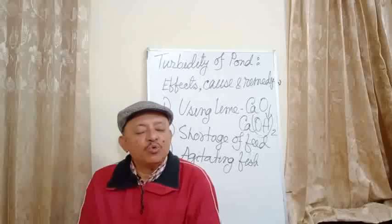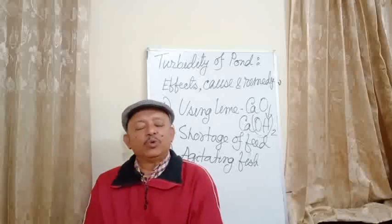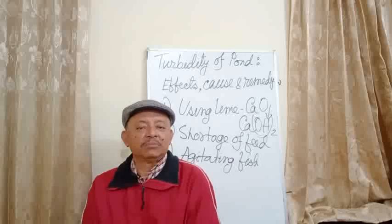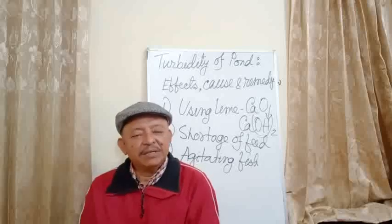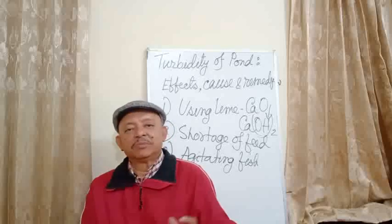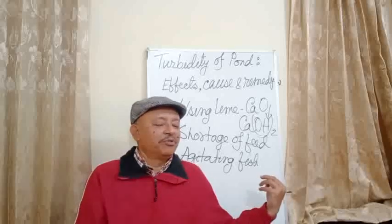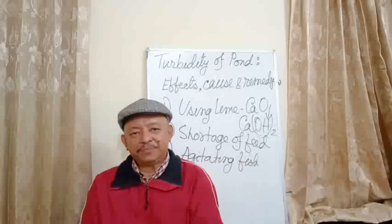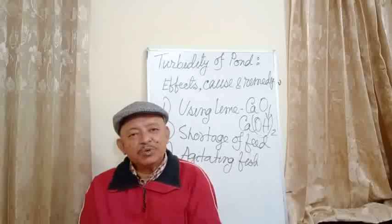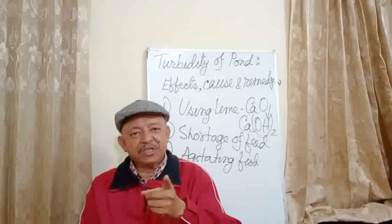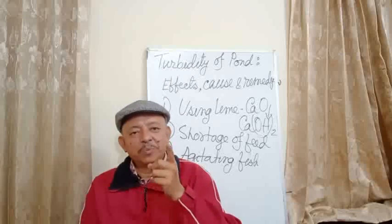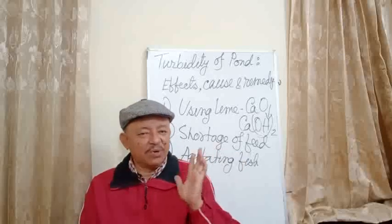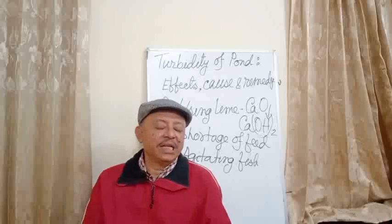To address the problem of agitating fish, we can partly reduce the population of the specific fish species that creates more mud or turbidity in the water, reducing it to a level that is not harmful to the pond. This is the third problem.